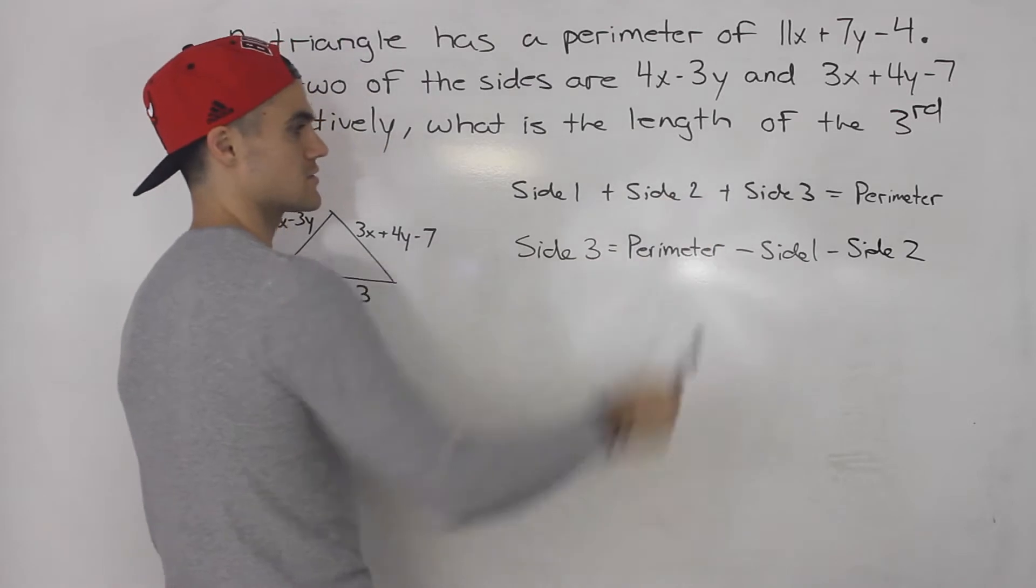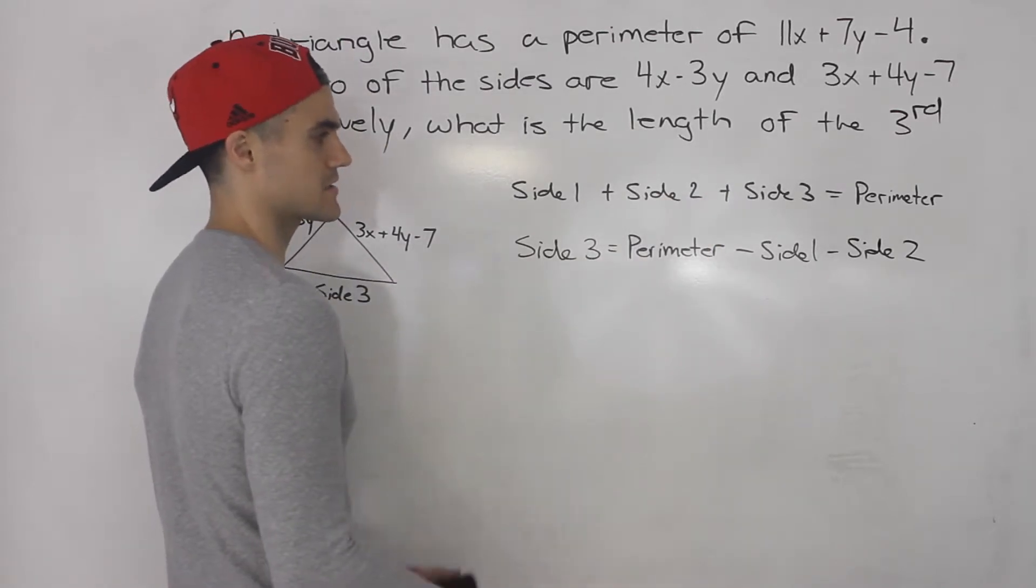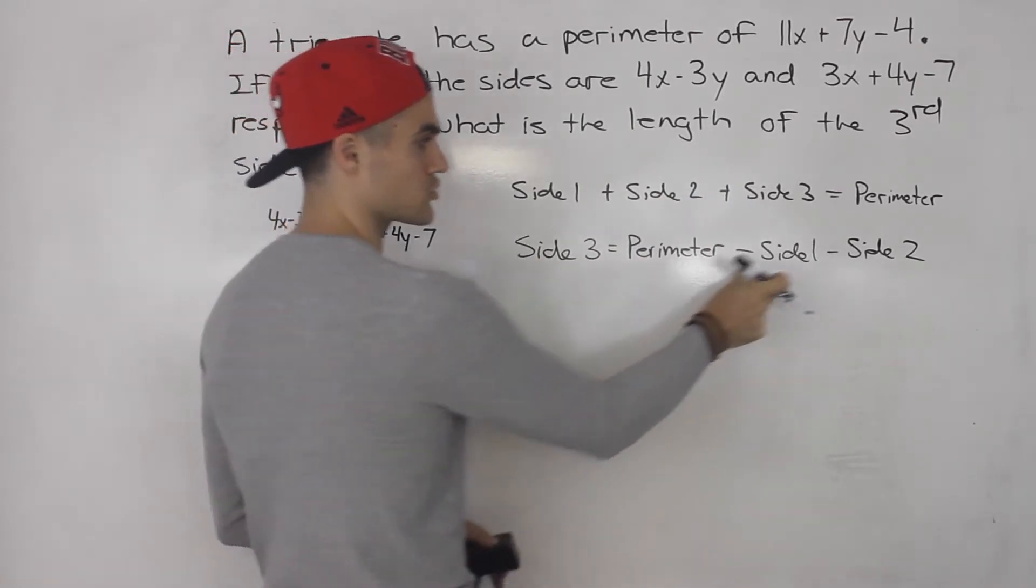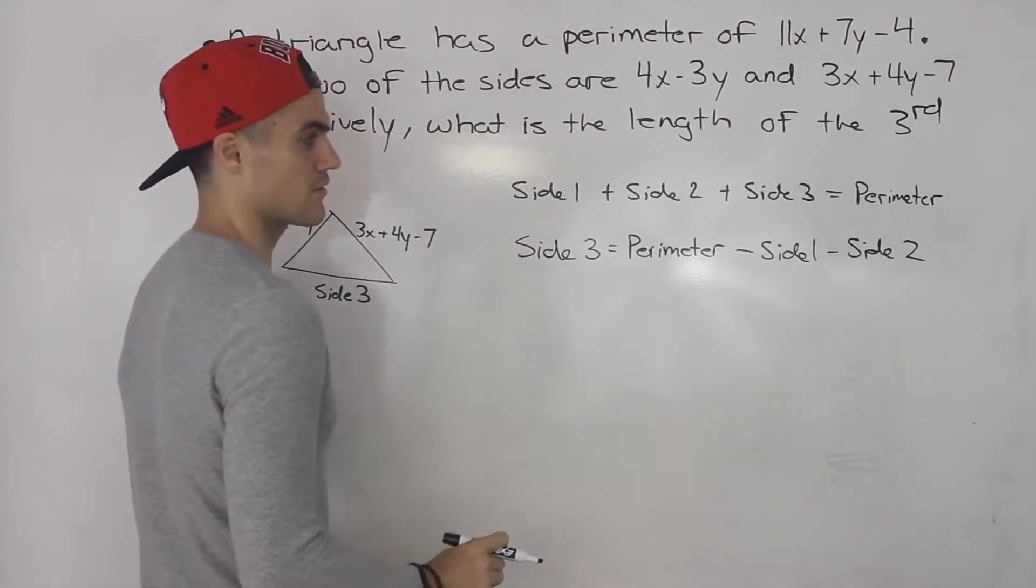If we bring both of these to the right side, that makes sense. The full perimeter of a triangle subtract two of the sides, get the length of the third side.